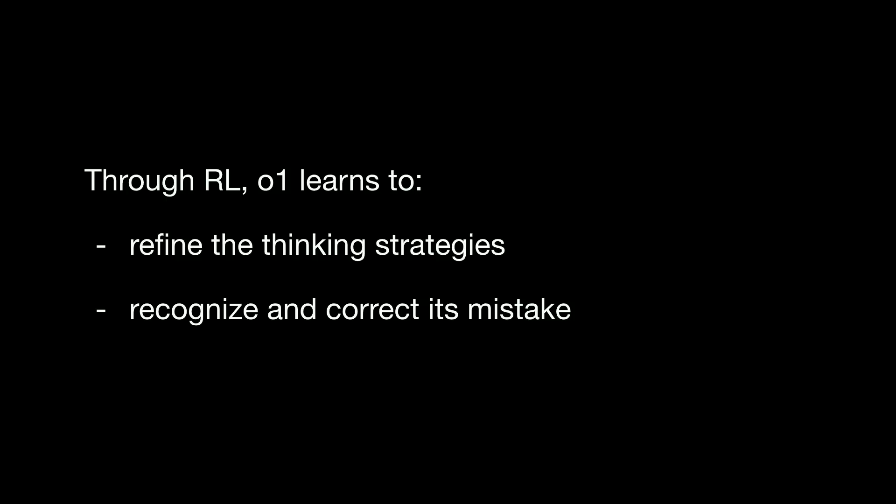When O1 attempts to solve a very difficult problem, it may not get to the working strategy in one go. But just by trying a strategy, even if it's unsuccessful, can give some cues as to what to try next. So O1 does this, and then eventually it gets to the better strategy. So it's very patient, and it's a very different type of model.